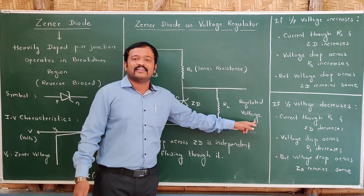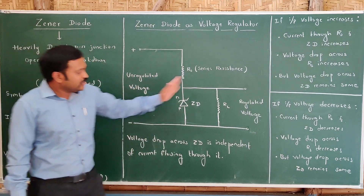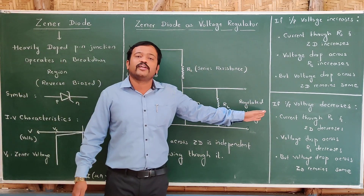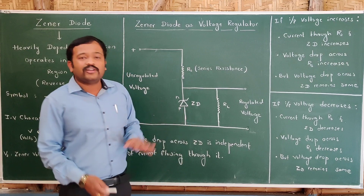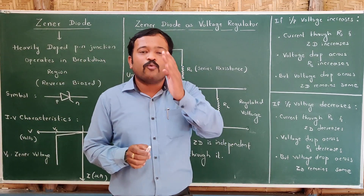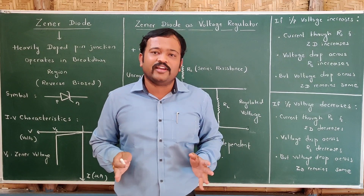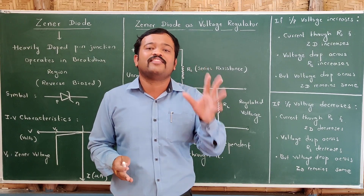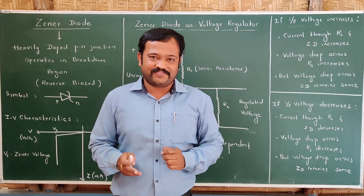Across the Zener diode — and hence across the load resistance — the voltage always remains constant, and because it remains constant we call it regulated voltage. Thus, whatever the change in the input voltage, the output voltage will be the same. That is how the Zener diode converts unregulated voltage to regulated voltage, and this purpose is called voltage regulation. For voltage regulation and stabilization, the key device is the Zener diode, whose property is that variation in current causes no change in voltage.